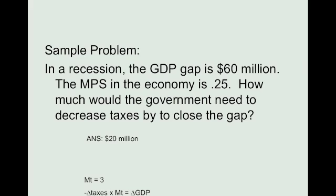And that's how we got 20. So taxes would have to decrease by $20 million.